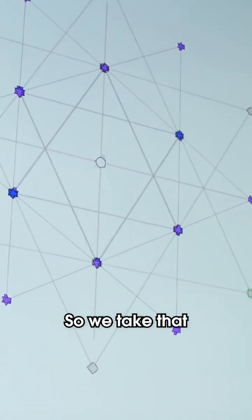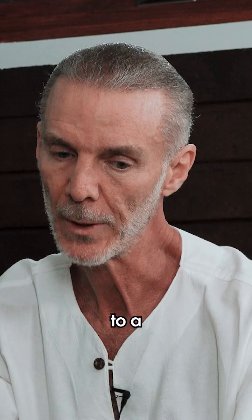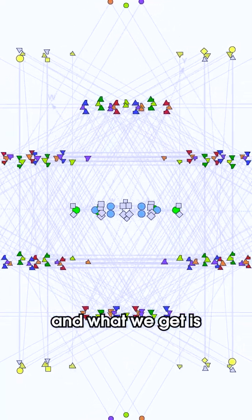We take that and then transform it by projective geometry to a lower dimension and by a certain angle. And what we get is a quasicrystal.